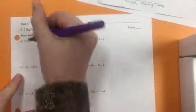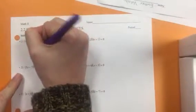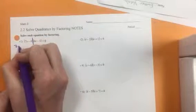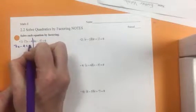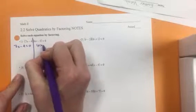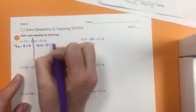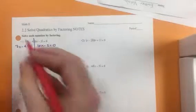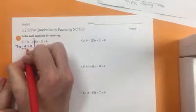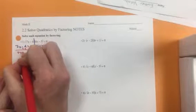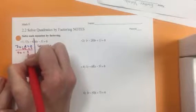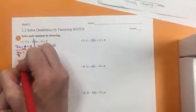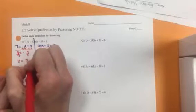So in order to solve, we need to set both factors equal to 0. So we'll have 7x minus 4 equals 0, and 6x minus 5 equals 0. I go through and solve both, so I'm going to add 4. 7x equals a positive 4. Divide by 7. x equals 4 over 7.